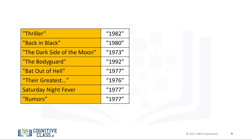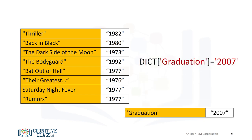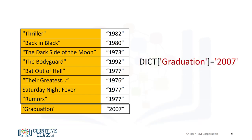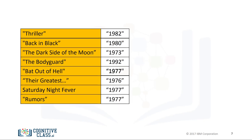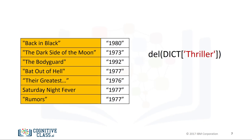We can add a new entry to the dictionary as follows — this will add the value 2007 with a new key called 'Graduation'. We can delete an entry as follows — this gets rid of the key 'Thriller' and its value.